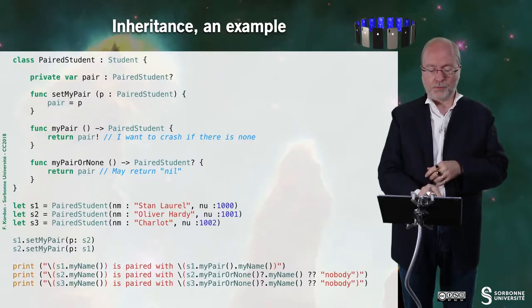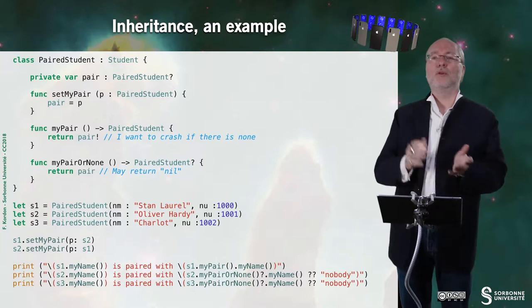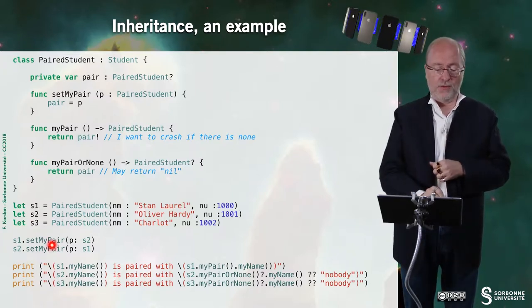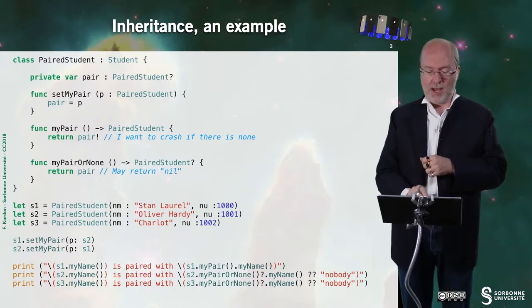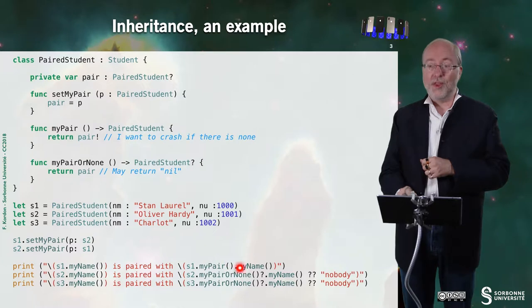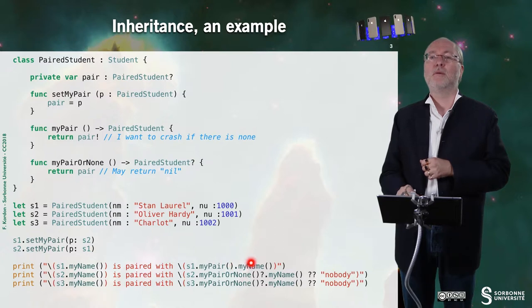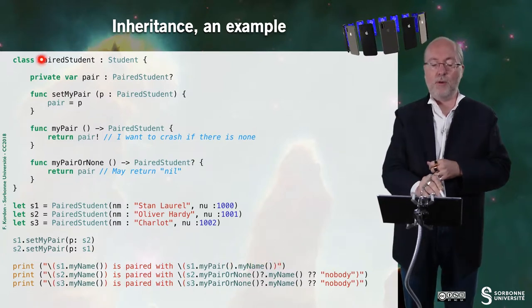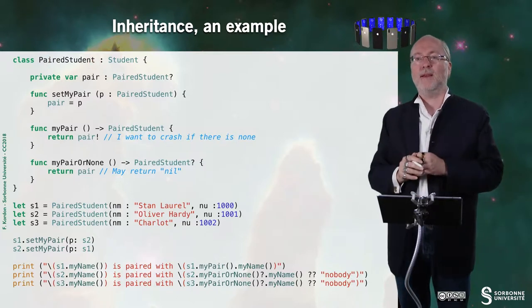So here let's create a few students. So Stan Laurel, Oliver Hardy and Charlo. Stan Laurel are paired together. So I can do that way. I can access S1 dot my pair parenthesis dot my name parenthesis. My name is not defined for a pair student, but it inherited from student. No problem there.